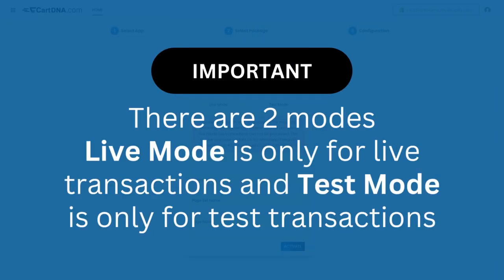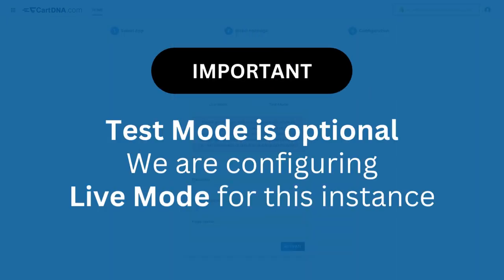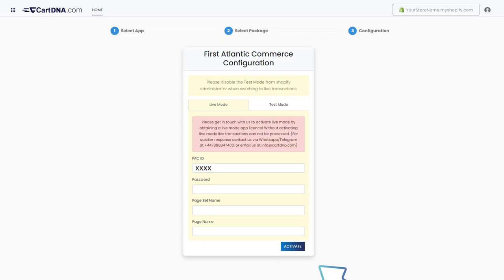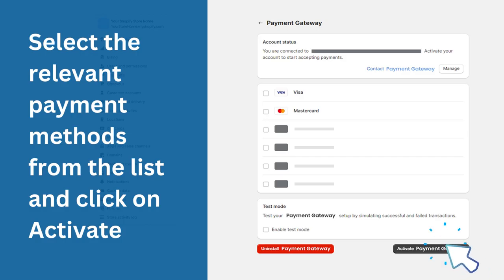Important: there are two modes. Live mode is only for live transactions, and test mode is only for test transactions. Test mode is optional. We are configuring live mode for this instance. Enter the credentials extracted from your First Atlantic Commerce account and click on Activate. Select the relevant payment methods from the list and click on Activate.